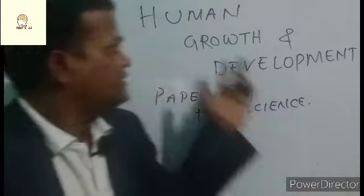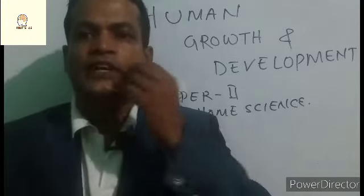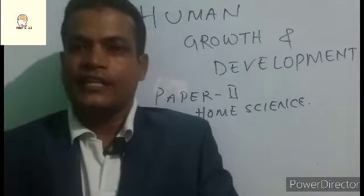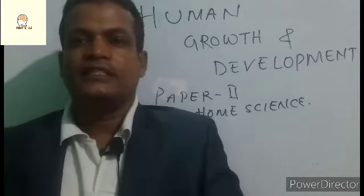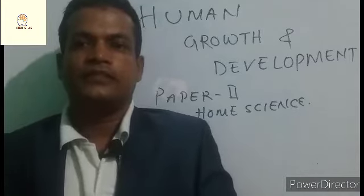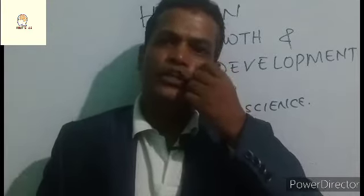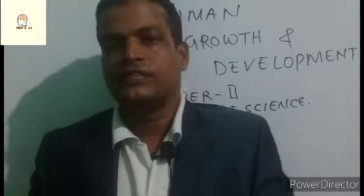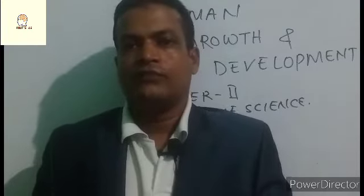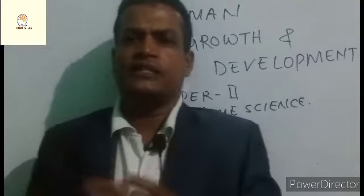As it is written — human growth and development — we know that human growth and development takes place since conception till death. That means we can say from mother's womb to the tomb, womb to tomb, that is from mother's womb to the graveyard. That is total development.